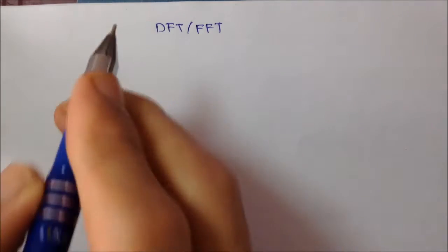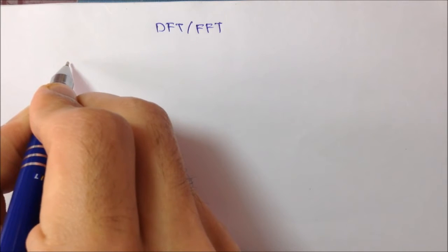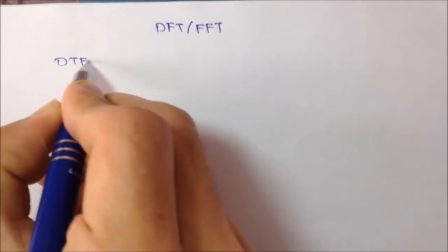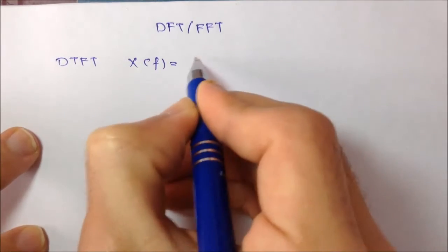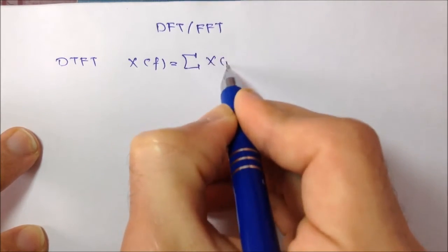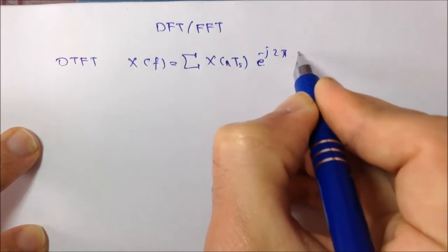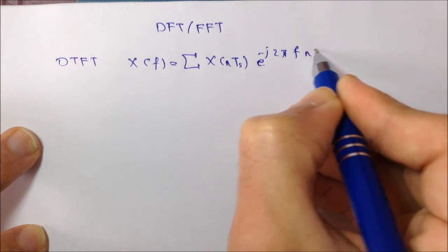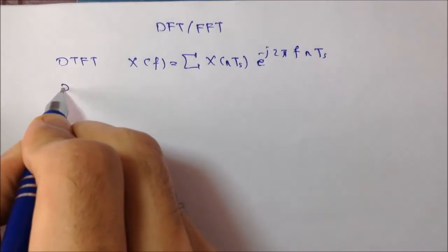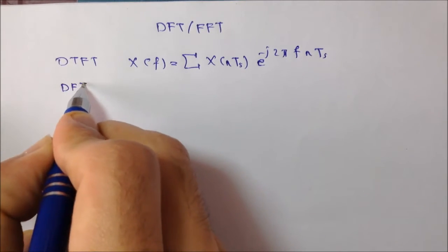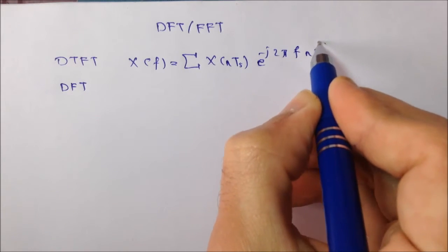If you remember from the previous video which was about the DTFT, we got the formula of the DTFT which was X(f) equals summation X(n)Ts e to minus j 2π f n Ts. And in order to get to the DFT, the discrete Fourier transform, we have to get rid of everything that is related to time, particularly this Ts factor.